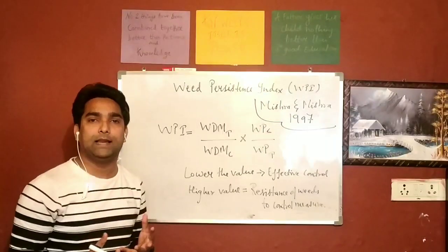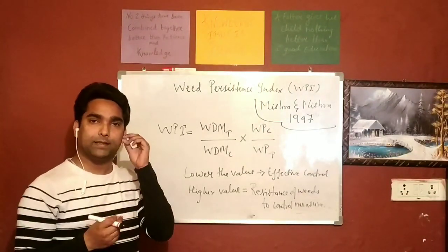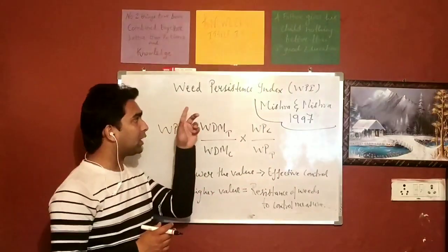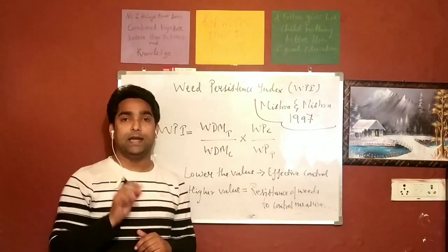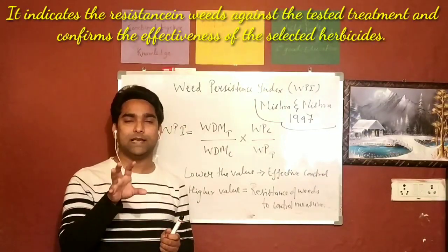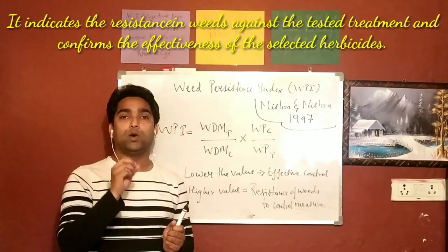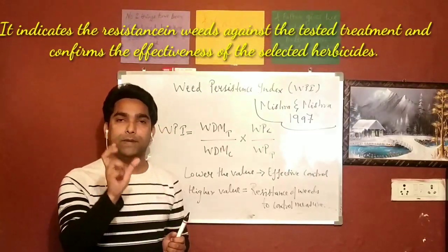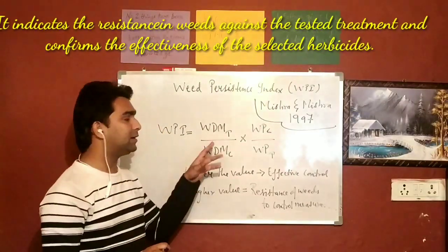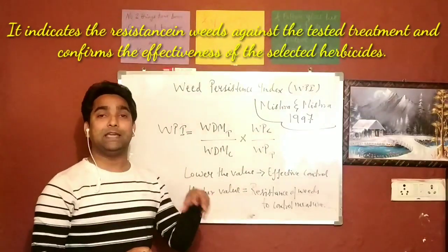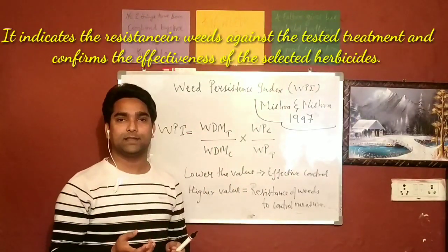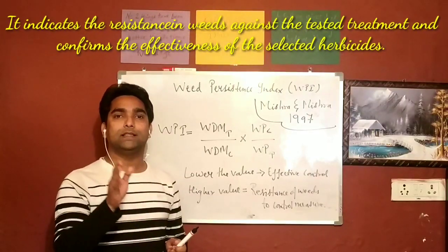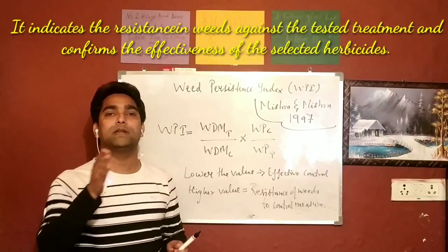Now what do we need to infer from the value? So basically, weed persistence index indicates how the weeds have resisted a particular control measure. The treatment's effectiveness indicates whether that herbicide is able to kill the weeds or if your weeds have become resistant.